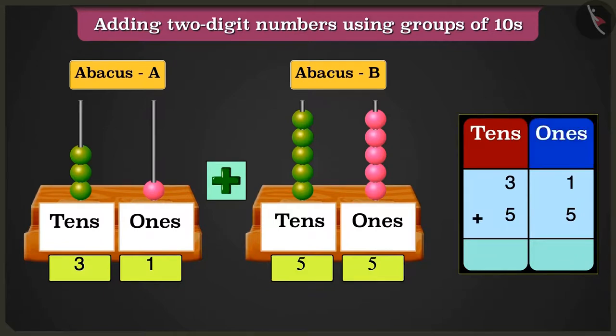We will add the numbers in the ones box first, that are 1 and 5.